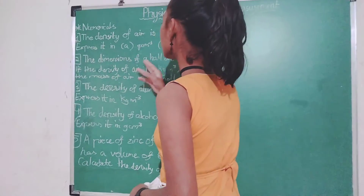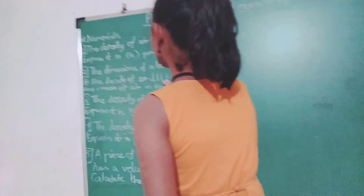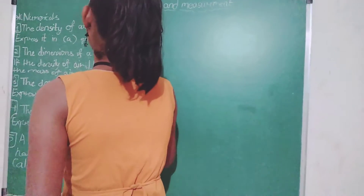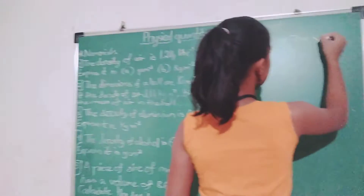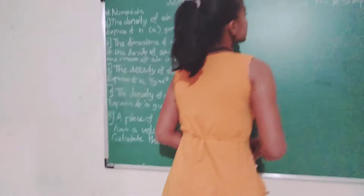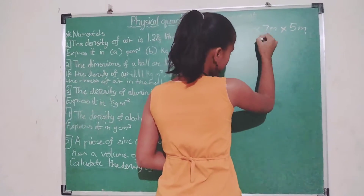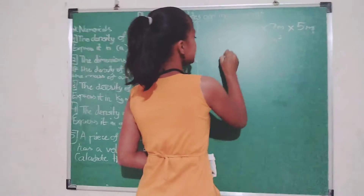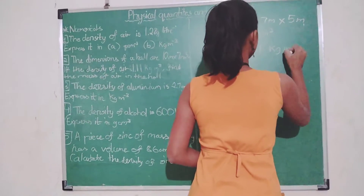The second numerical: the dimensions of a hole are 10 meter into 7 meter into 5 meter. If the density of air is 1.11 kg per meter cube, find the mass of air in the hole. First we write what is given — length is 10 meter, breadth is 7 meter, height is 5 meter. We multiply them to get the volume, which is 350 meter cube. Density is already given as 1.11 kg per meter cube.